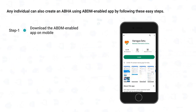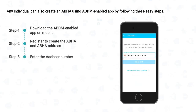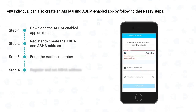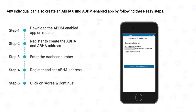First, download an ABDM-enabled app like Arogya Setu from the App Store on your mobile phone. Click on Register to create the ABHA number and ABHA address. Next, enter your Aadhaar number and verify the OTP. Then click Register and set your ABHA address — it is easy to remember, either user-generated or a default address in the format XYZ@ABDM. Click Agree and continue. Your ABHA is now created.